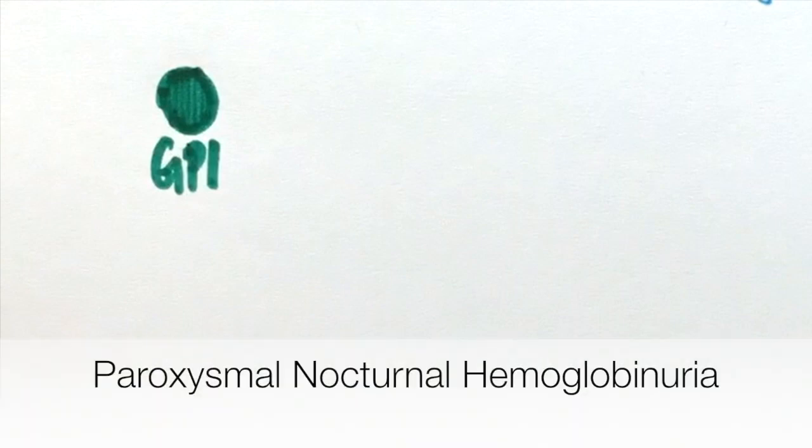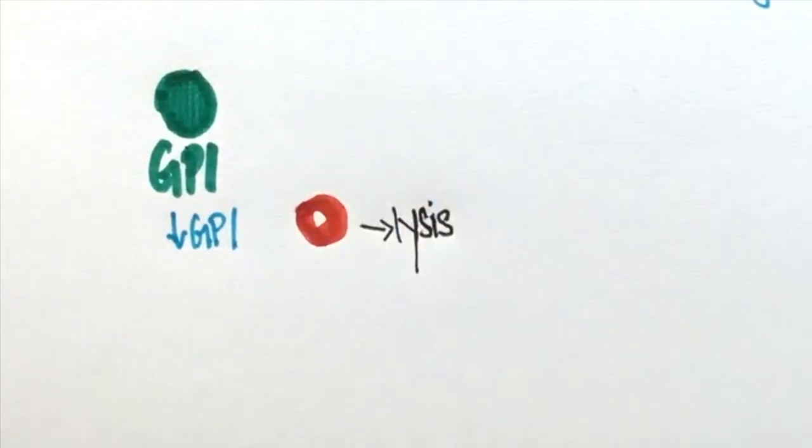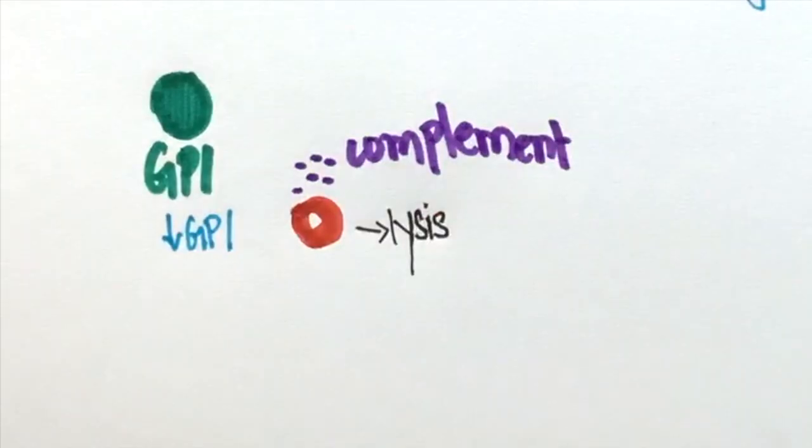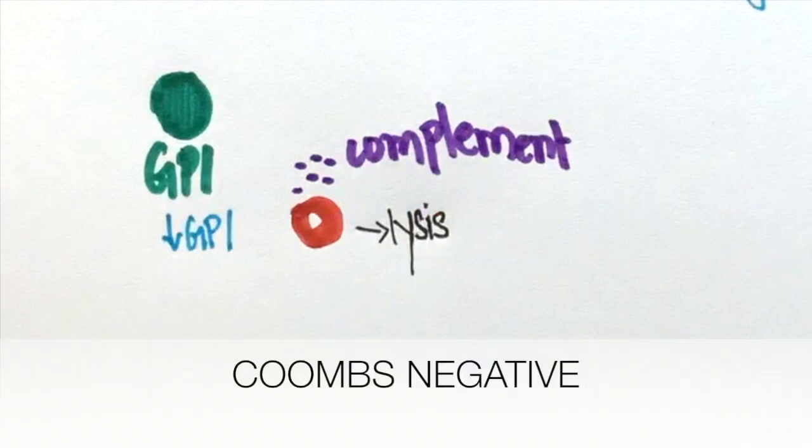GPI is a molecule which prevents the breakdown of red blood cells by complement. In paroxysmal nocturnal hemoglobinuria, there is impaired synthesis of GPI. So the red blood cells undergo intravascular hemolysis by complement. Since this is done by complement and not by antibodies, the Coombs test will be negative.